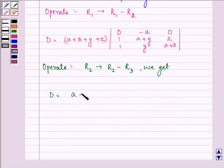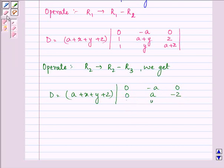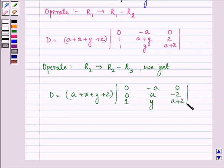D equal to a plus x plus y plus z. Now here we will have 0, minus a, 0, now again 0, a minus z, and here now we have third row remains the same.